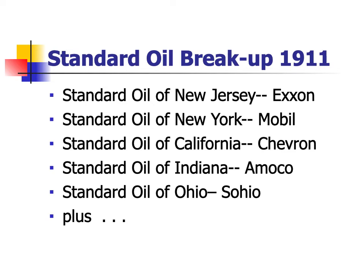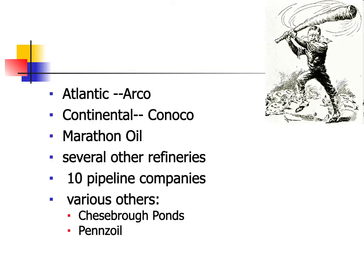It's worth noting this all took place before widespread car ownership — Ford released the Model T shortly after the case started and didn't perfect mass production until after the breakup. Some of the big companies originally part of Standard Oil became what we later knew as Exxon, Mobil, Chevron, Amoco, Sohio, Arco, Conoco, Marathon, other smaller refineries, several pipeline companies, and related-product companies like Chesebrough-Ponds, who makes Vaseline, and Pennzoil, who makes motor lubricants.